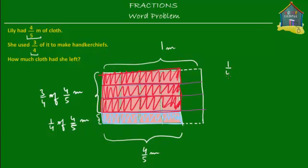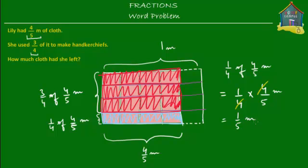Now what is one out of four of four-fifths meter? It's the same as saying it's equal to one-fourth times four-fifths of a meter. And that's equal to — let's simplify. When we simplify, this four and this four get cancelled out, and what we have left is one-fifth of a meter. Well, this is one method of solving it.